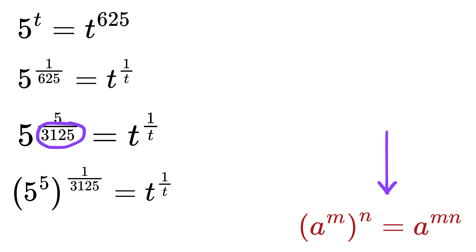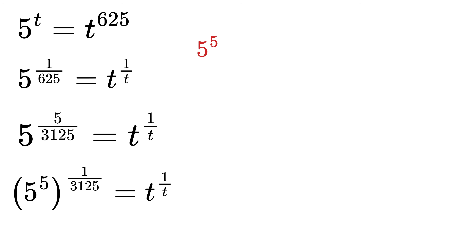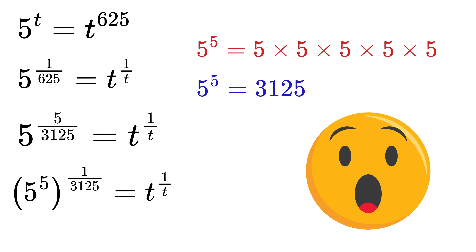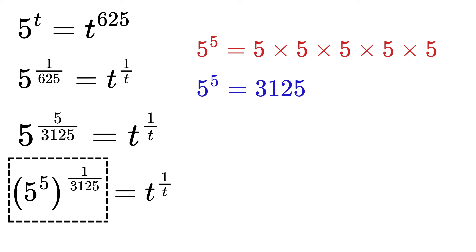Again using this rule of exponents, we can split this as 5 raised to the power 5, then the whole raised to the power 1 over 3125. Now let's simplify 5 raised to 5: that's 5 times 5 times 5 times 5 times 5, which equals — surprise — 3125. So this entire expression becomes 3125 raised to the power 1 over 3125.